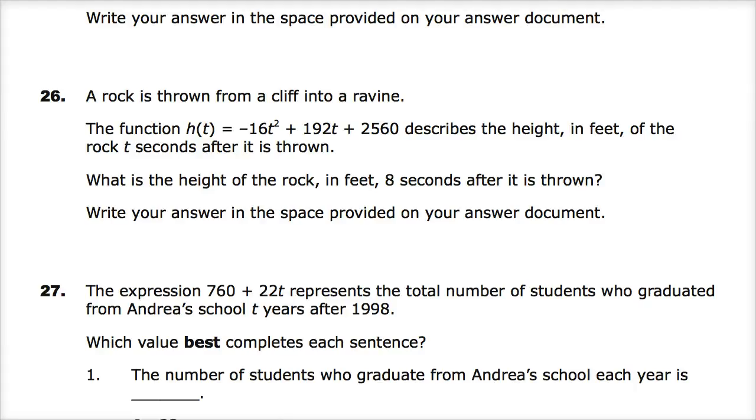A rock is thrown from a cliff into a ravine, which is like the first line of a murder mystery only read by someone like Fred Flintstone or something. The function h(t) = -16t² + 192t + 2,560 describes the height. Now that's important. That's a key part of this question.